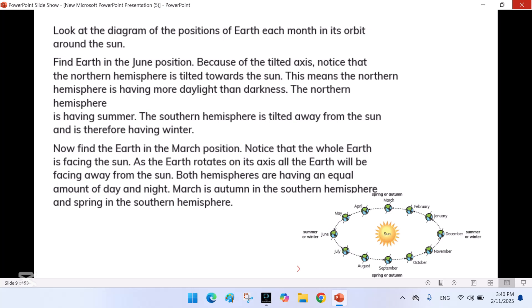Now find the earth in the March position. Notice that the whole earth is facing the sun. As the earth rotates on its axis, all the earth will be facing away from the sun. Both hemispheres are having an equal amount of day and night. March is autumn in the southern hemisphere and spring in the northern hemisphere.